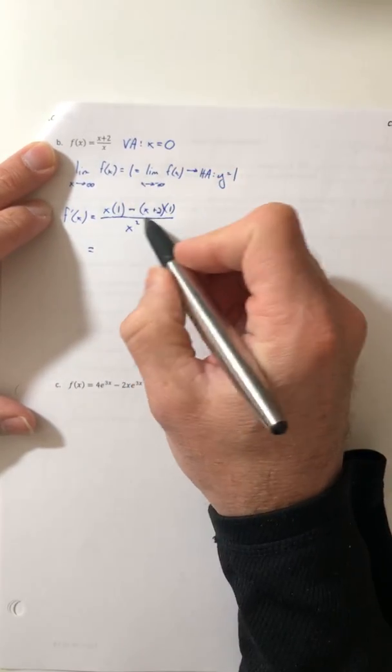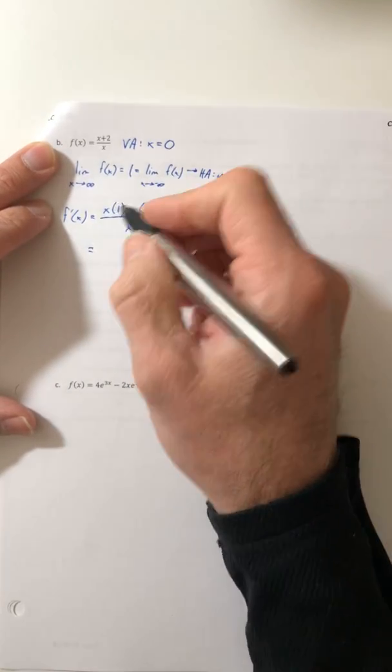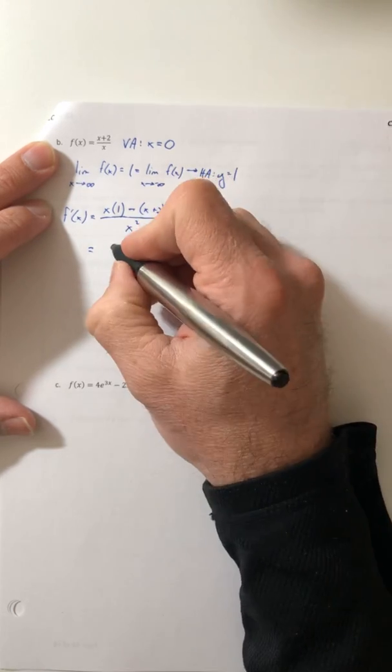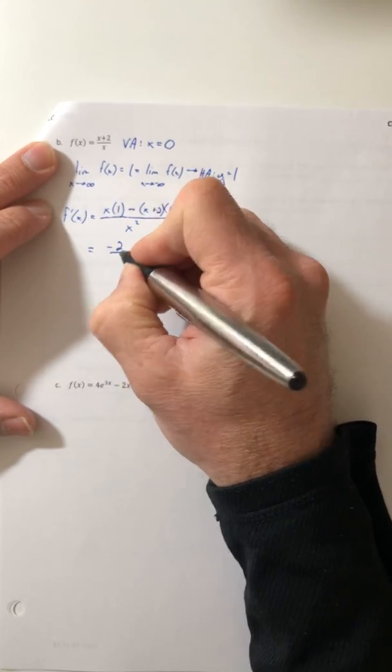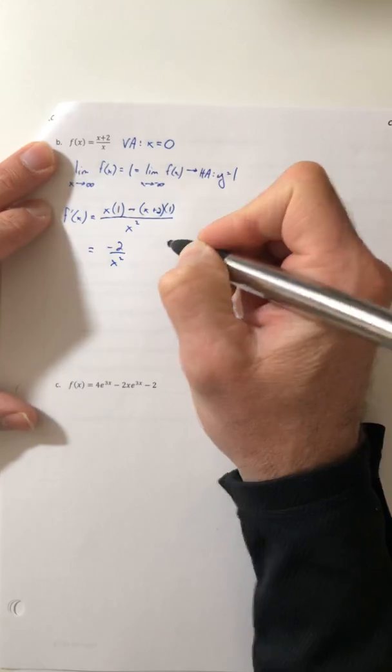So if we multiply and distribute, your x's actually cancel out and you have negative two all over x squared.